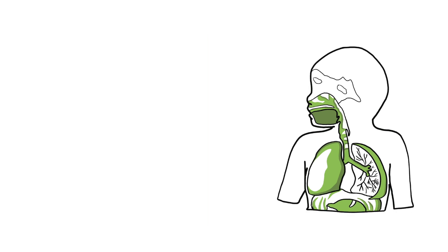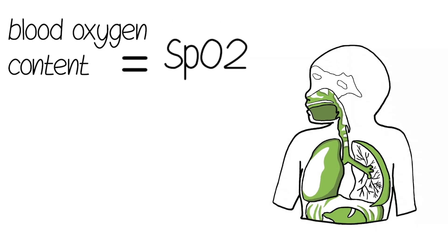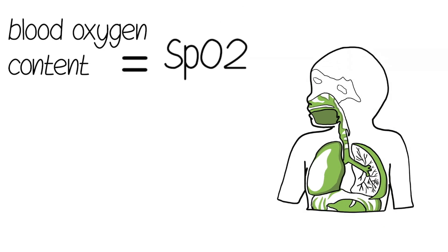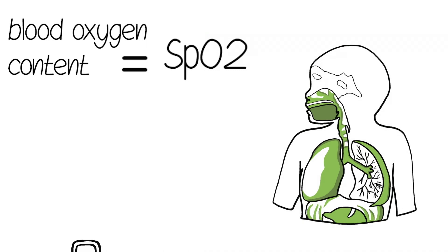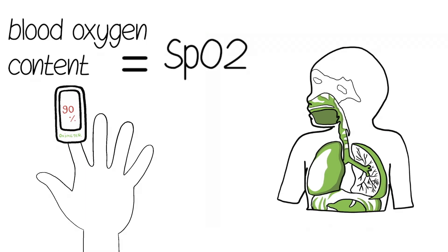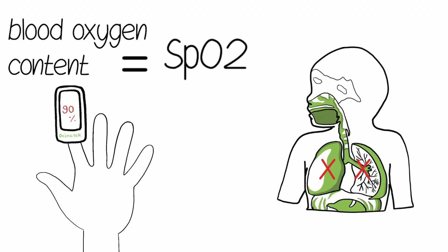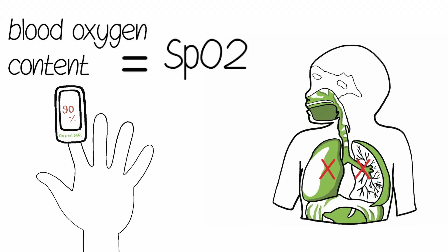The blood oxygen content, called SpO2, is measured by a pulse oximetry device. However, if the lungs are underdeveloped or get infected, the patient may experience respiratory distress and are thus unable to effectively distribute oxygen throughout the body.